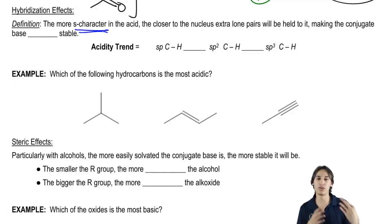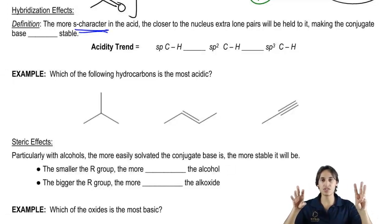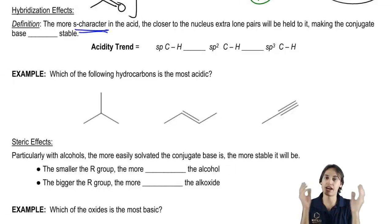Remember we were saying 25% S character would come from sp3 where you have an S and you have three Ps, so then 25% of the entire thing is S and that would be the S character.